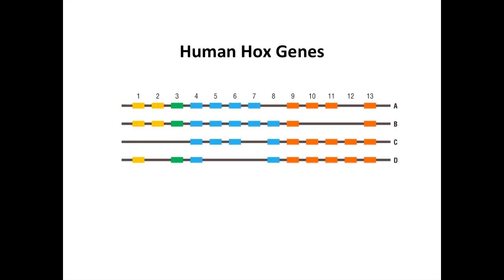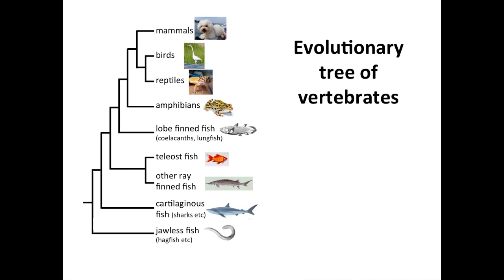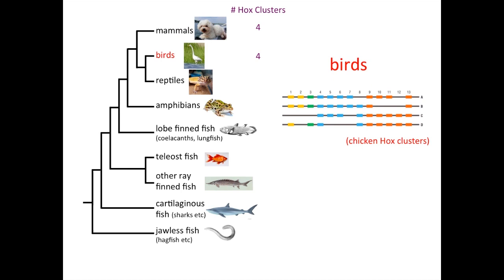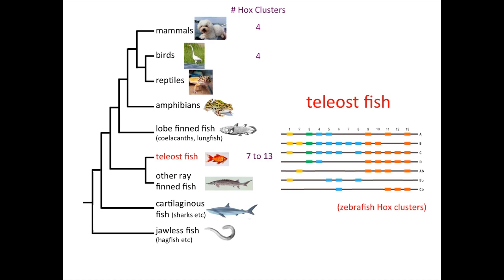How did we end up with this particular configuration of Hox genes, and what did the Hox genes of the last common ancestor of all vertebrates look like? When we look at the Hox genes of other mammals like mice, we find a very similar number of Hox clusters and genes within the clusters to humans. Looking across to birds and other tetrapods — the four-limbed vertebrates — we also see four Hox clusters, but with occasional loss and gain of individual genes. When we look at even more distantly related vertebrates like fish, we see more variety in Hox composition. The model organism zebrafish has seven Hox clusters, many other fish have eight clusters, and salmon have even more clusters, with variation in the composition of genes present in each cluster.